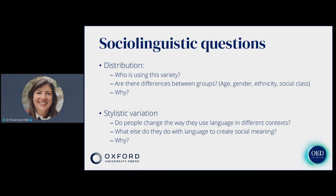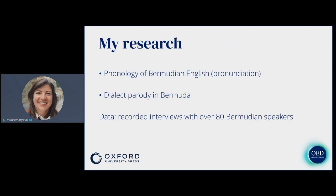Beyond the sounds, grammar, and words of the dialect, there are also sociolinguistic questions we must ask: who is using this variety? Are there differences between groups based on age, gender, ethnicity, social class? Do people change the way they speak in different contexts, depending on who's listening? And what do they do with language to create social meaning? These are questions about distribution and stylistic variation.